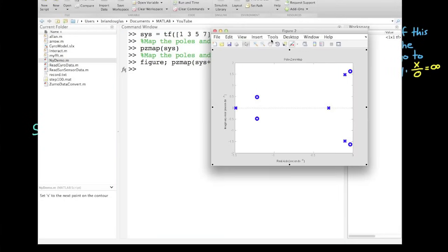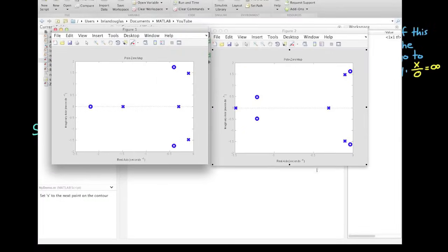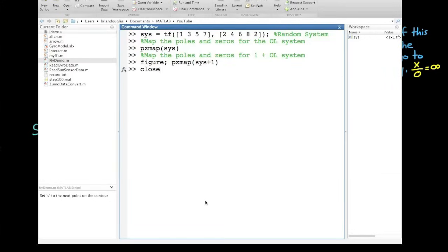So here you can see how the zeros in the right graph are not obviously related to the poles in the open-loop system in the left graph. That's because when we add 1 to the open-loop system, it can really move the poles and zeros around.